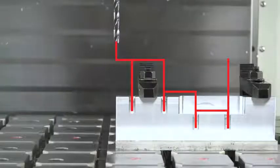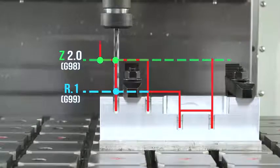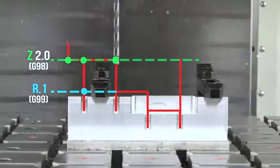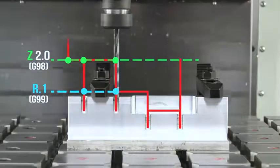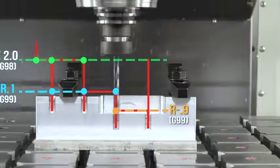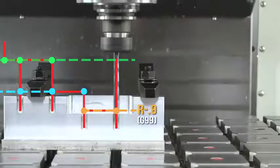So, we're using a G98 with a Z start point of two inches so it hops over that first clamp. And then, we use an R plane of minus point nine for those third and fourth holes so we avoid cutting air.